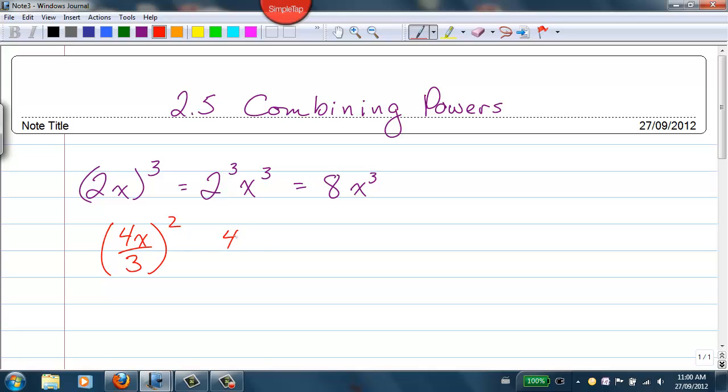Same thing with a quotient. 4x over 3 to the power of 2 is like saying 4 to the 2, x to the 2, all over 3 to the 2. 4 squared is 16, and 3 squared is 9, so we get 16x squared over 9.